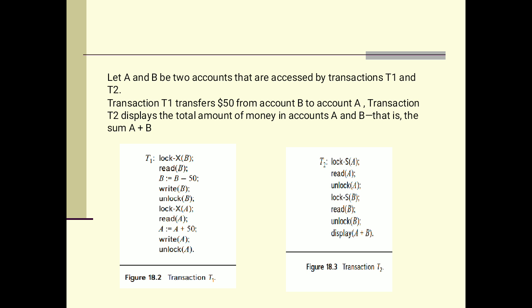Then these 50 rupees has to be transferred to account A. Lock X(A) - that means A account has to be locked in exclusive manner. Then read statement, then A is equal to A plus 50. That means 50 dollars are transferred from B account to A account. A account is updated with 50 dollars.